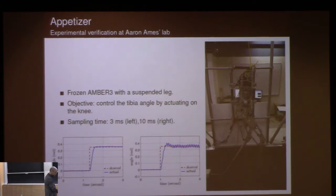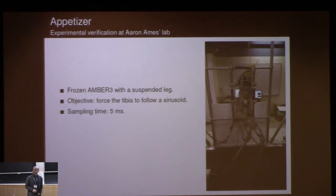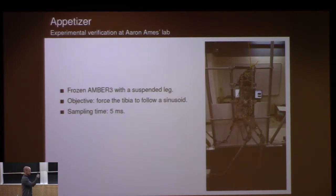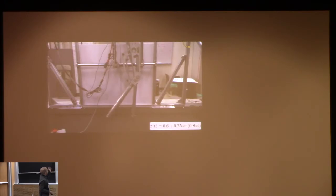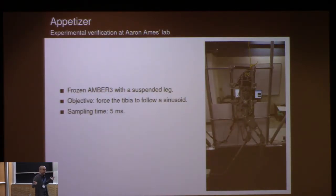At least for step references it worked. Then we said: can we ask the knee joint to track a desired trajectory? We picked a sinusoid to track, and indeed — with no model, no data, no prior training — we can track the sinusoid. We don't know if we're controlling the joint in the robot; this could be any other system with relative degree 2. It just worked.